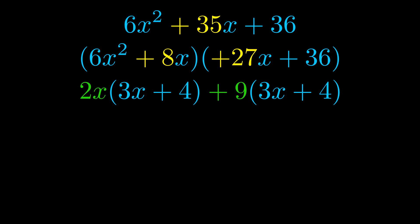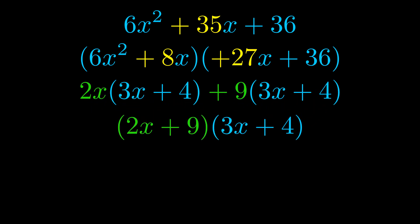Notice also how what remains inside of the parentheses is the same in both cases — the blue values are the same. Those blue values will become one of our factors, and we combine the two green GCF values we pulled out to get the other one. And that is our fully factored equation.